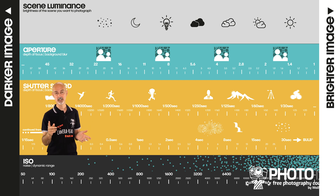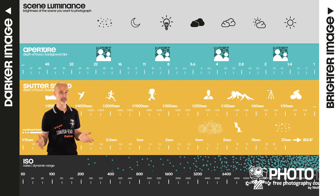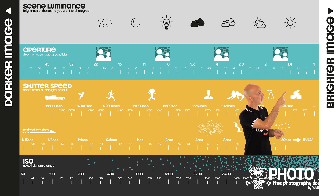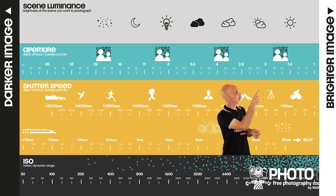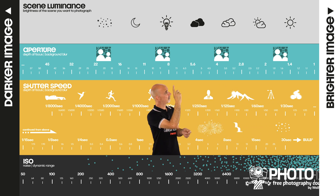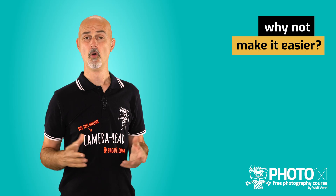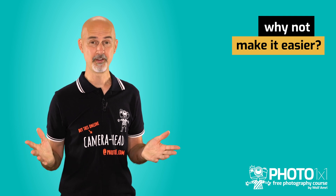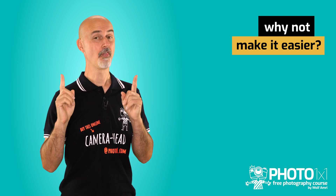But why in the world would camera manufacturers use numbers like 1.4, 2, 2.8, 4, 5.6 and so on? Why not just use 1, 2, 3, 4, 5, 6?